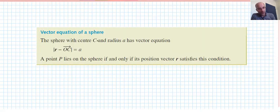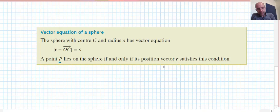Now, using that idea of equidistant points from the center, we could say, using a vector approach, the sphere with center c and radius a has the vector equation of magnitude of r minus vector OC equals a. In other words, a point p lies on the sphere if and only if its position satisfies the condition. The point p's position vector r satisfies the condition. So, r is the position vector of the point p. In other words, OP is what they mean by r.